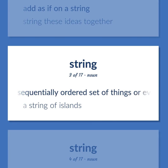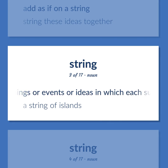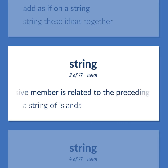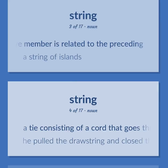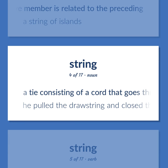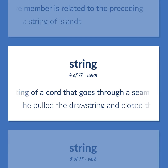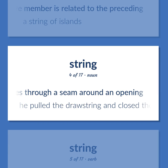A sequentially ordered set of things, events, or ideas in which each successive member is related to the preceding. A string of islands. A tie consisting of a cord that goes through a seam around an opening. He pulled the drawstring and closed the bag.